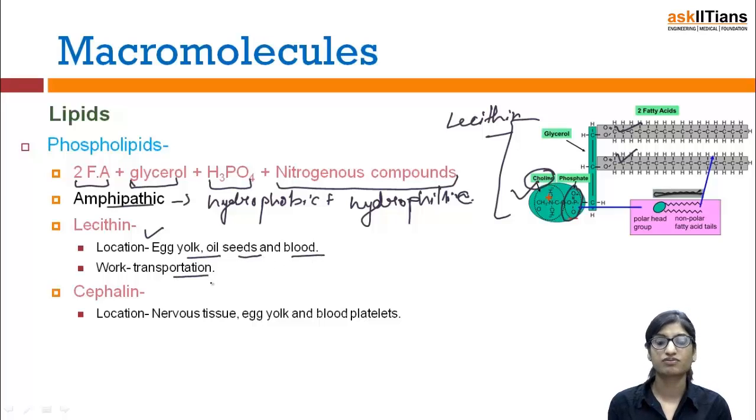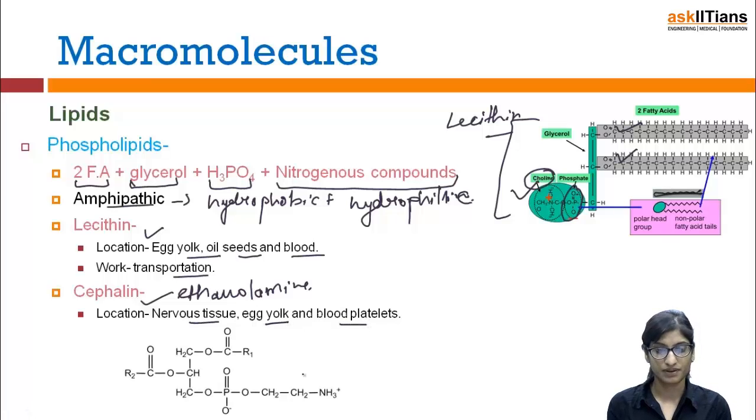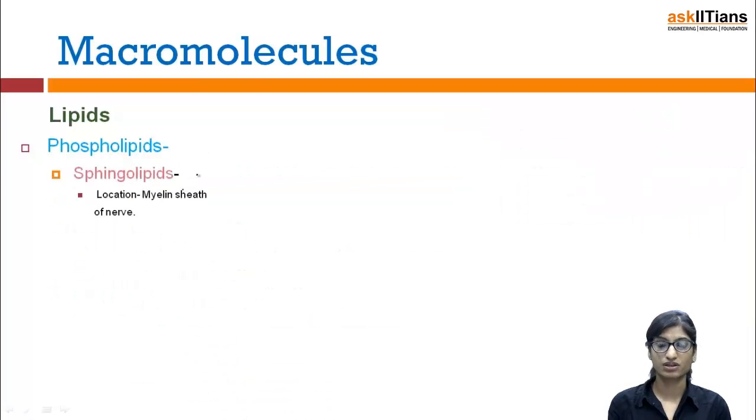Next is cephalin, also known as ethanolamine. Location: it is present in nervous tissue, eggs, and blood platelets. Why is it known as ethanolamine? Because the nitrogenous compound group present with it is ethanolamine. This is the structure of cephalin, with the glycerol group present internally.